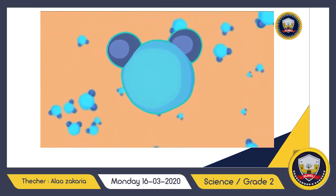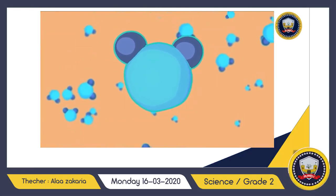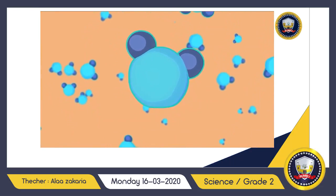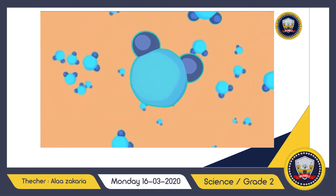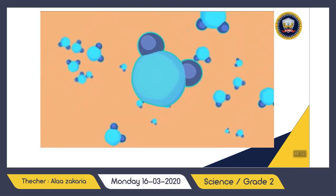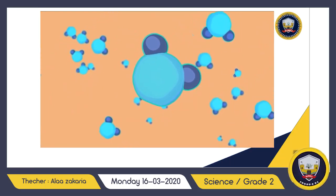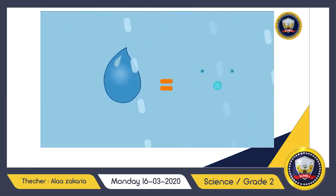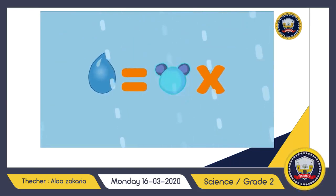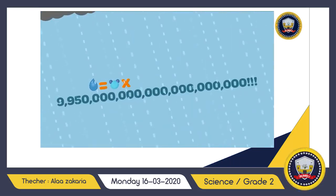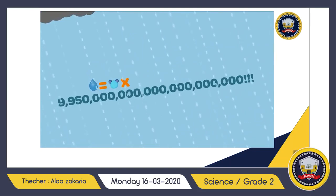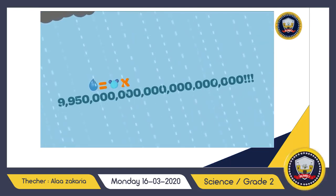Matter is made up of atoms and molecules, which are too tiny to see unless you have a very strong microscope. They're like tiny little building blocks that make up everything around us. To give you an idea, there are almost 10 octillion water molecules in a single drop of rain.